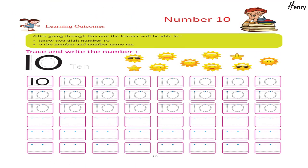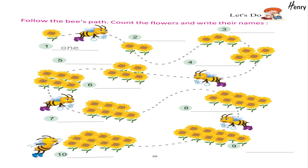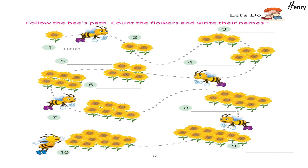Number 10 — Learning Outcomes: After going through this unit, the learner will be able to know the two-digit number 10. Write the number and number name 10. Trace and write the number 10. Let's do — follow the bee's path, count the flowers and write their names.